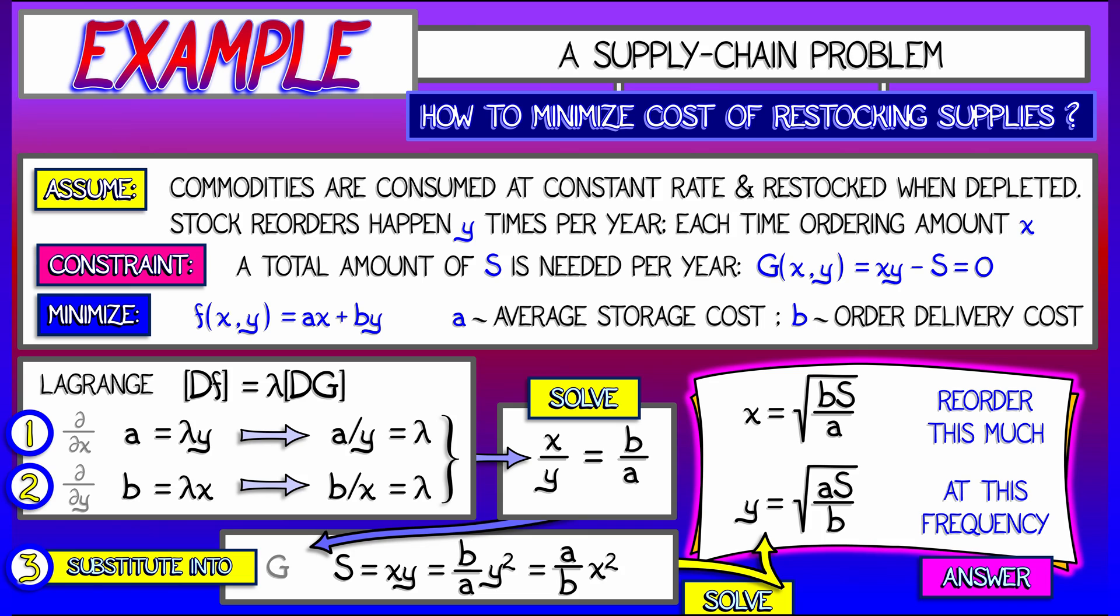And this is so cool. I think this is really interesting that Lagrange's method can tell you the most efficient way to do restocking. Imagine what it could do with a much more complicated problem with many commodities and many different types of constraints.